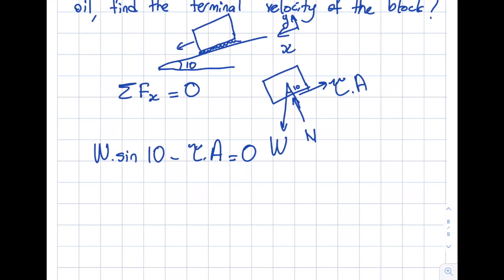I usually look at what I know, what I don't know. W is given as 1 kg times 9.81, so that's known. Sine 10 is just a number. Area is given as 1 m² in the question statement. The only thing I don't know is shear stress. Let's assess that.